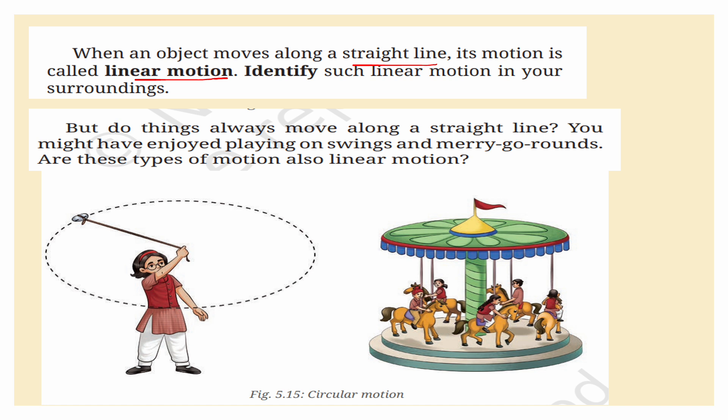Identify linear motion in your surroundings. A car moving on a straight road, a ball rolling across a field, a train traveling along a straight track — they are all examples of linear motion.